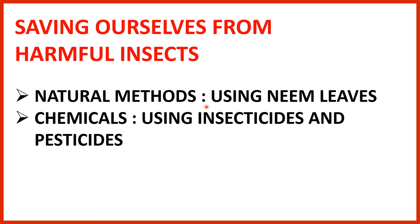If we find harmful insects around our surroundings, how do we protect ourselves? There are a few natural methods and a few chemicals that help. One natural method is using neem leaves, and another is the use of chemical insecticides and pesticides. Remember, prevention is better than cure — if you keep your surroundings clean, these insects won't breed around your house.